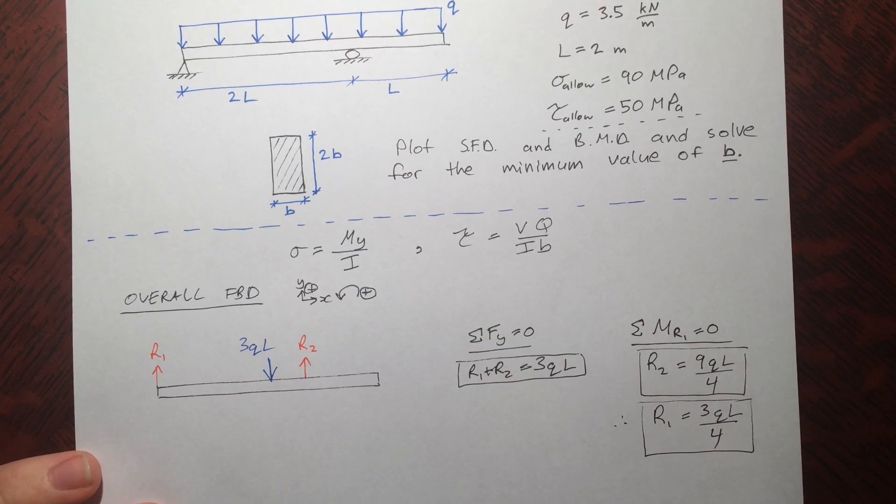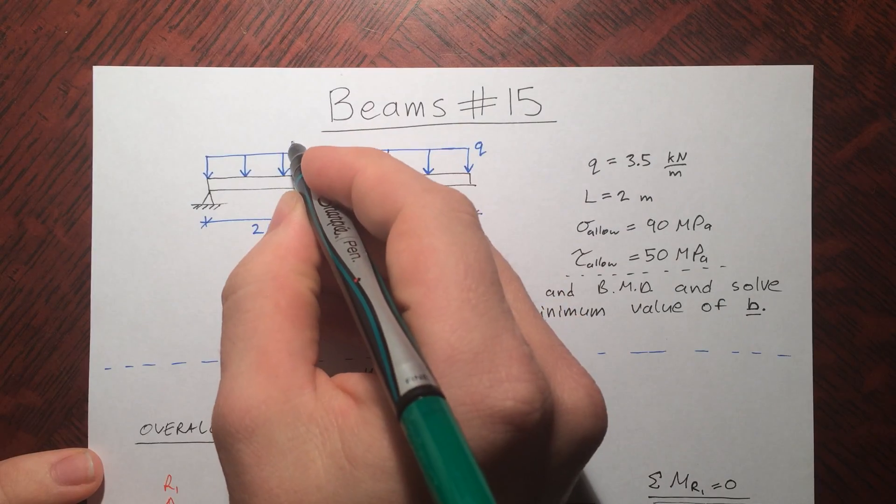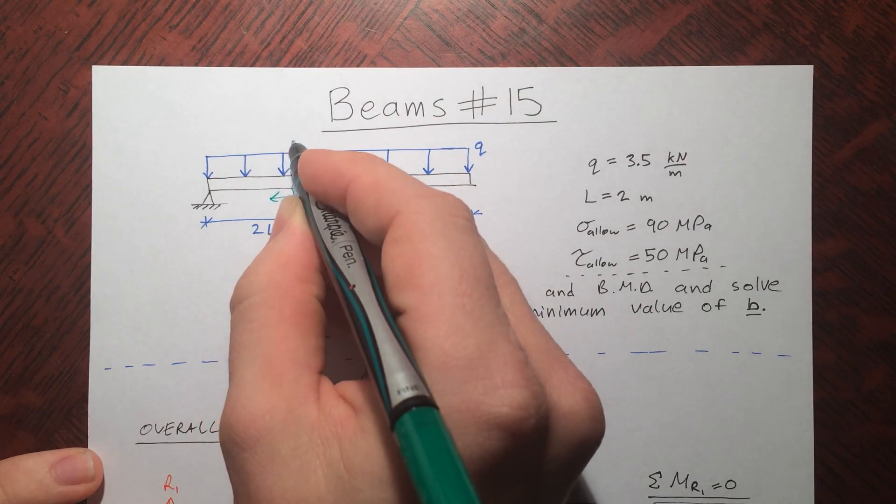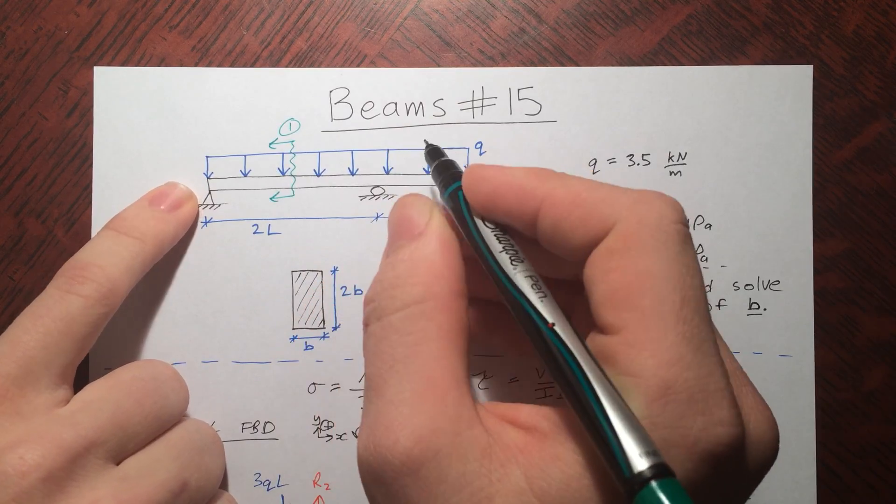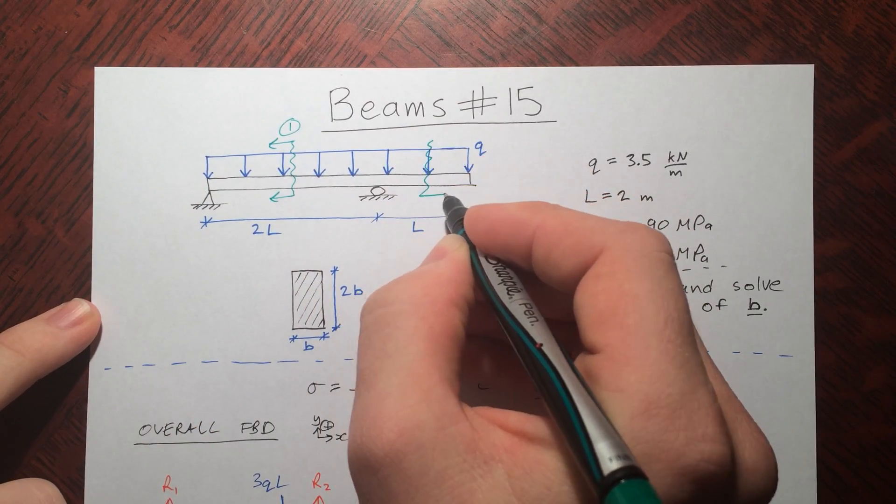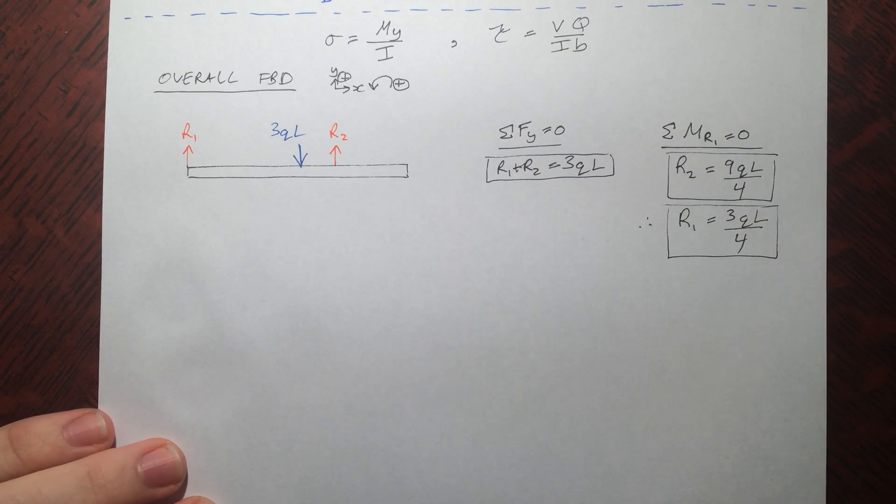All right, so there's our reaction, so now let's go ahead and find our internal forces, which we do by making a cut, thereby exposing them. Make a cut here where the conditions are the same, then after the support we make another cut where the conditions change, call it 1 and 2. So a free body diagram of 1.